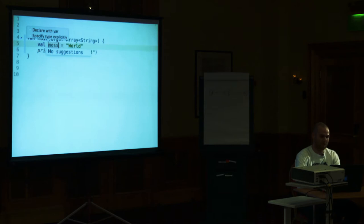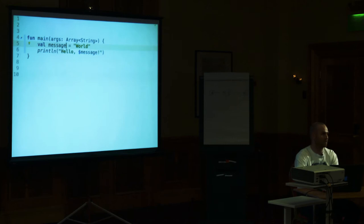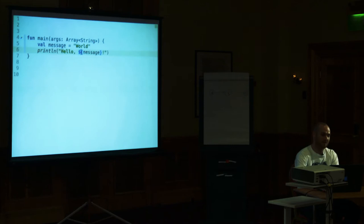We can extract part of the string into a variable. We have `val`, which means we define a final variable in Java called `message`, and we assign a string literal. The actual type here is `String` — Kotlin can do local type inference, so I don't have to specify it. Here we have string interpolation. The full syntax is `${curly braces}`, but when we have only one expression we can skip them. In Java it's string concatenation, so this is a small but helpful feature.